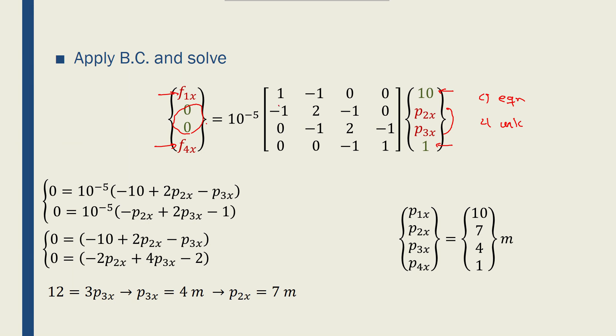If I take the second row and the third row and put them together, I end up with these equations. These zeros come from the left hand side, and then 10 to the minus 5 is the coefficient of the matrix. Then I have -10 plus 2p2x minus p3x. And by multiplying the third row by this vector, I'll have -p2x plus 2p3x minus 1.